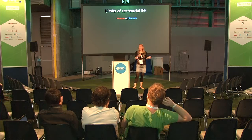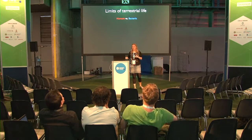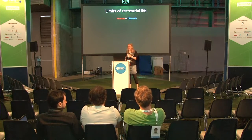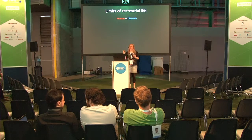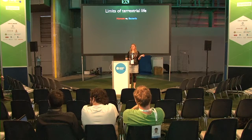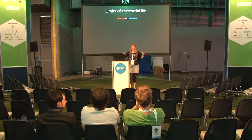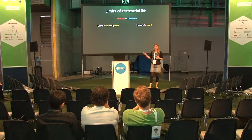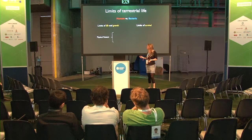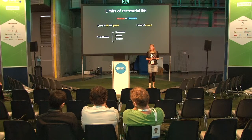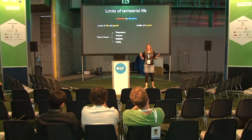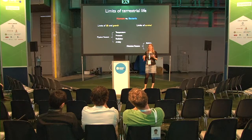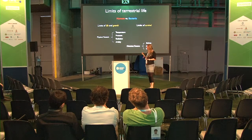Here we can look at humans — extremely complex life — versus bacteria, which are much simpler if unicellular. This division really changes quite a bit our definition of habitability. You can look at limits of life and growth on one side, and limits of survival on the other. Then you have physical factors such as temperature, pressure, radiation, and aridity — the amount of humidity or dryness of the environment. On the other hand, you have chemical factors such as salinity, pH, and solvents.